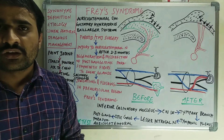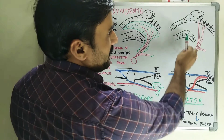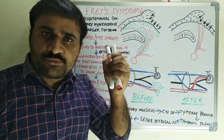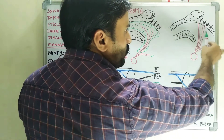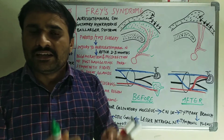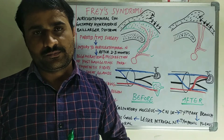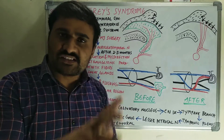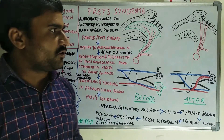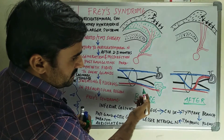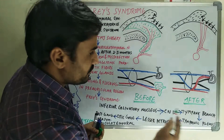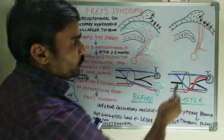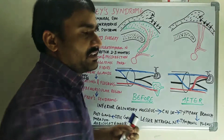After parotidectomy, there is no parotid gland. When you remove the parotid gland, there will be obvious injury to the auriculotemporal nerve or post-ganglionic fibers. In the healing period, after two to three months, there is regeneration of the post-ganglionic parasympathetic fibers and there is mixing of the parasympathetic and sympathetic nerve fibers.